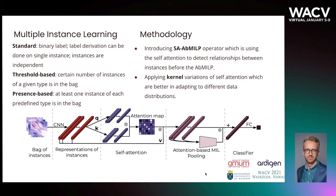For the threshold-based assumption, each instance has its own hidden label and the bag is positive if at least k instances have the same hidden label. For the presence-based assumption, the bag is positive if at least two instances have two different hidden labels of a certain type.